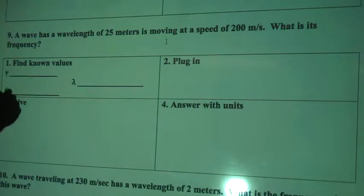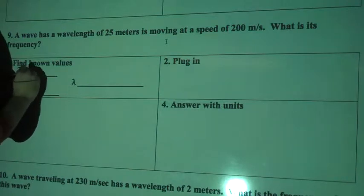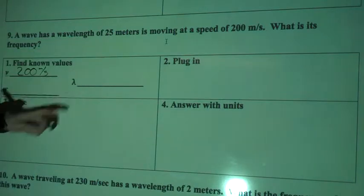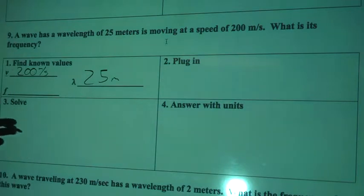So let's plug these in. So when our velocity of the wave is 200 meters per second, the wavelength, or lambda, is 25 meters. And then frequency, we don't know yet. We're solving for the frequency.